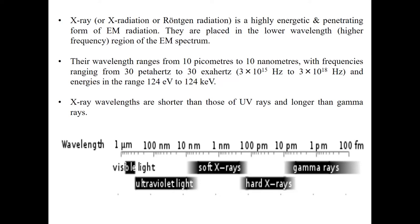X-rays, sometimes also called X-radiation or Röntgen radiation, are a highly energetic and penetrating form of electromagnetic radiation. They are placed in the lower wavelength or the higher frequency region of the electromagnetic spectrum — somewhere after ultraviolet and before gamma rays. Their wavelength ranges from about 10 picometers to about 10 nanometers, frequency ranges from about 30 petahertz to about 30 exahertz, and the energy range is between 124 electron volts on the lower end to about 124 keV on the higher end.